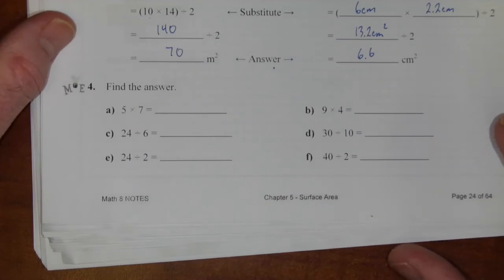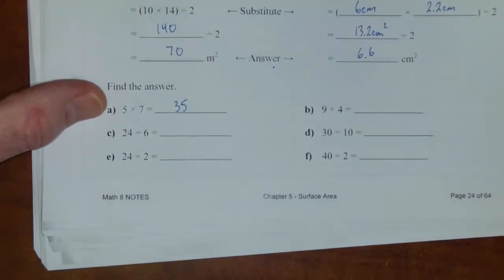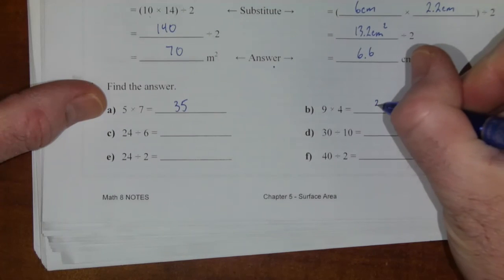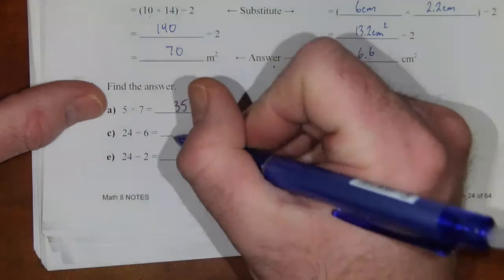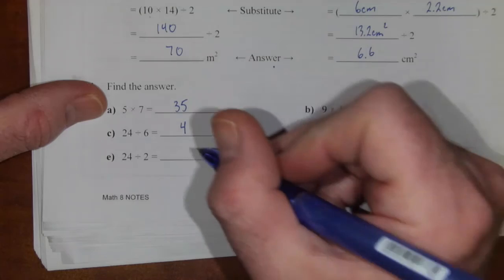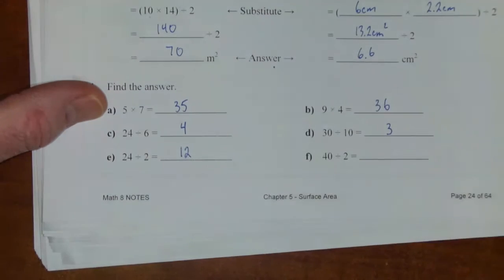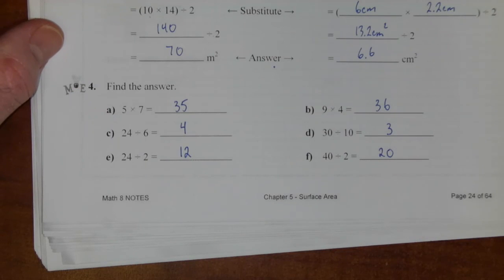Question number 4. Find the answer. 5 times 7 is 35. 9 times 4 is 36. 24 divided by 6 is 4. 30 divided by 10 is 3. 24 divided by 2 is 12. And 40 divided by 2 is 20. And that is your 5.3 warm up.